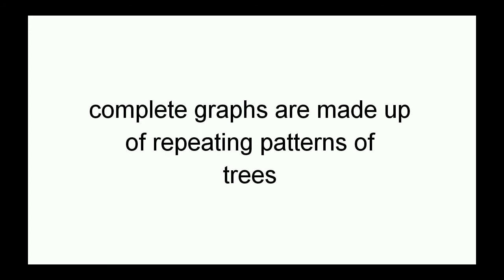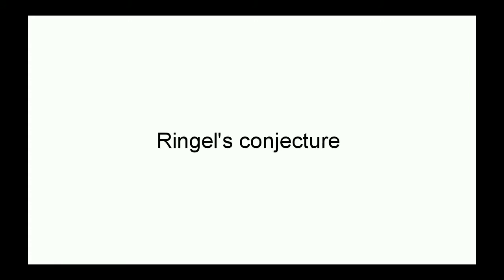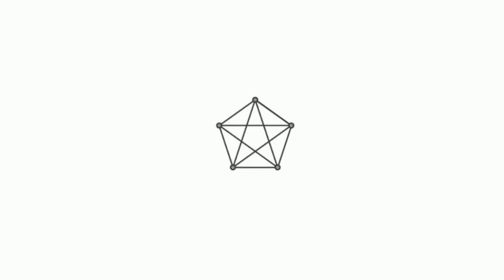The conjecture we are talking about states that complete graphs are made up of repeating trees, or in other words, complicated graphs are made up of simple ones. It's called Ringel's conjecture, which had been unsolved for about 60 years. The conjecture deals with graphs which have an odd number of vertices and all of them are connected among each other.